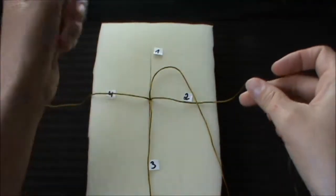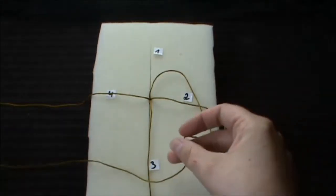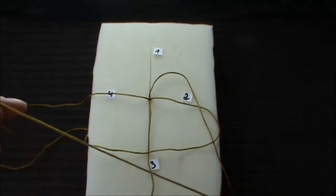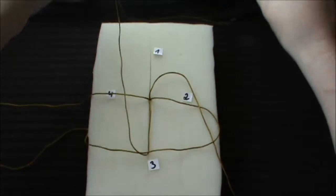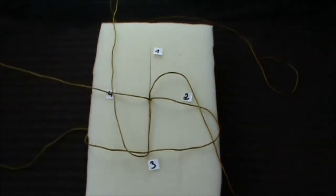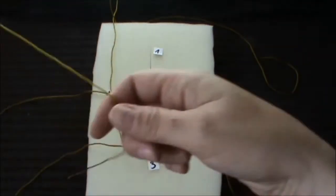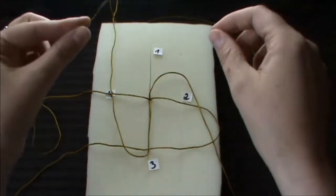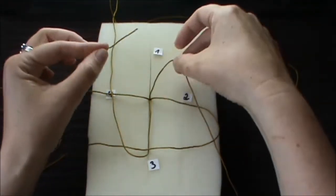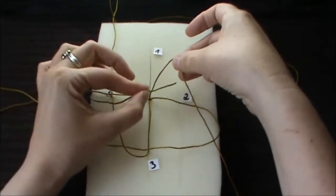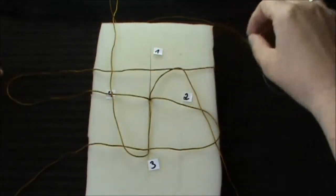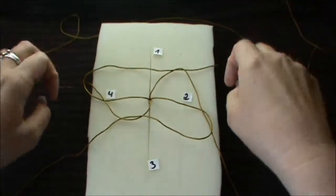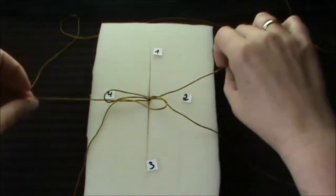Now you take string number two and put it over string number three. Now you take the third string and put it over string number four. And the fourth string you take and thread it through the loop of the first string.